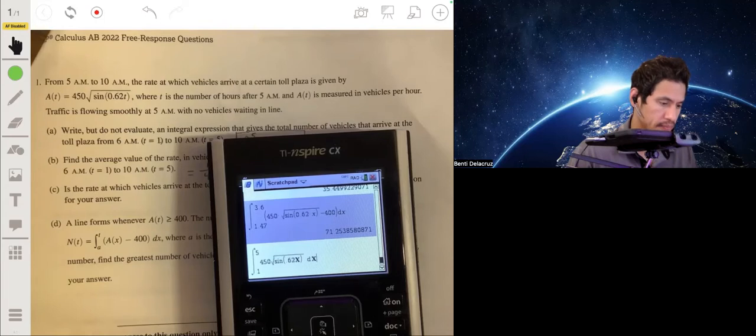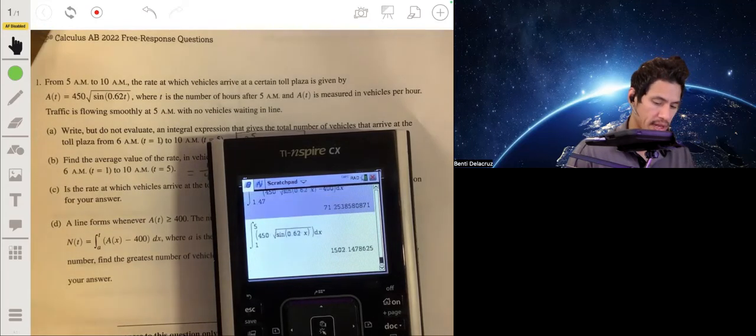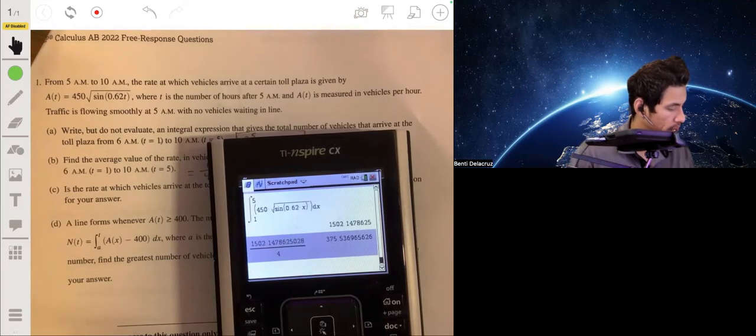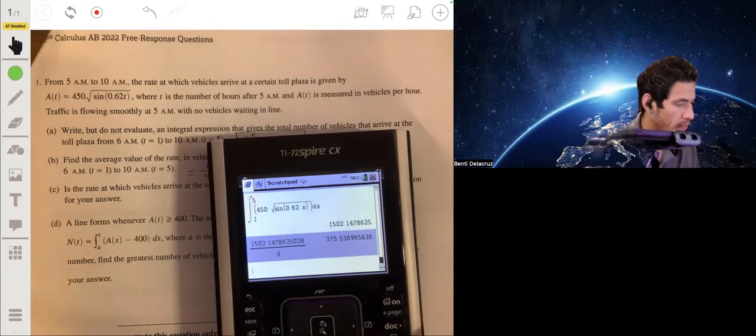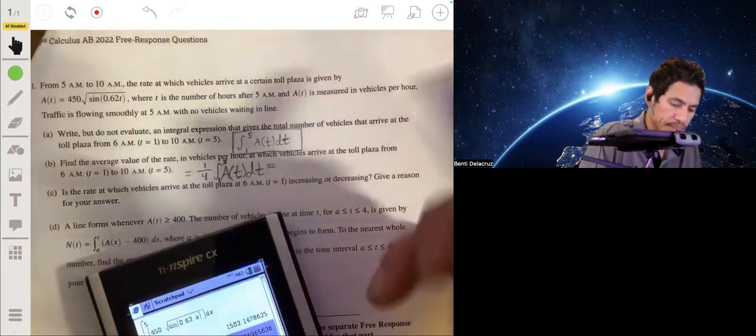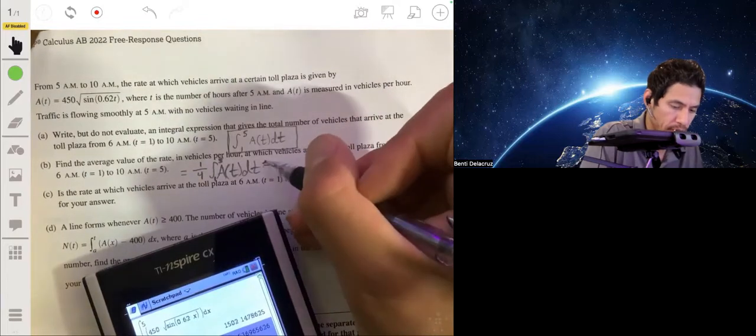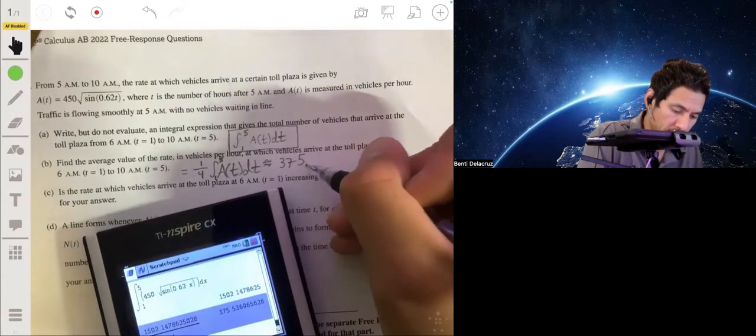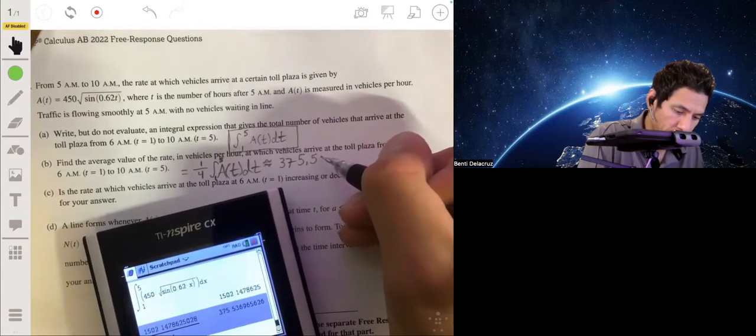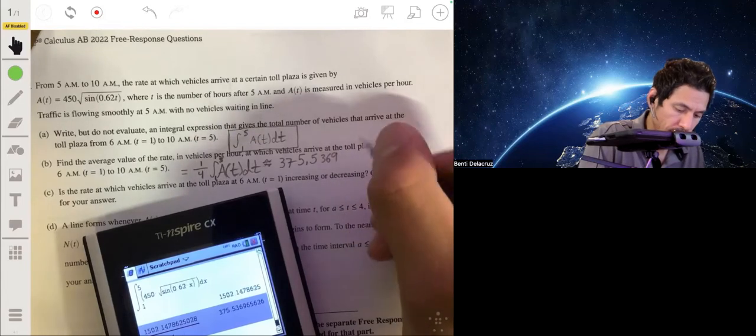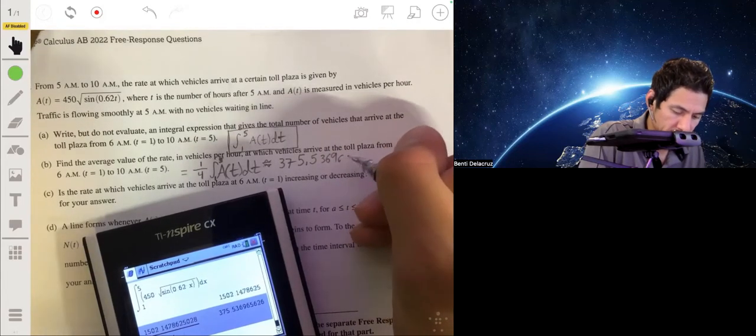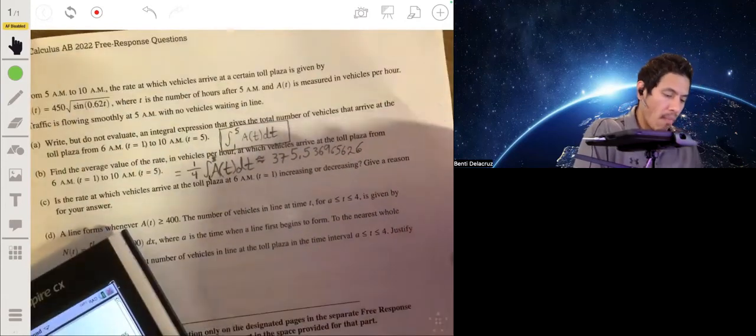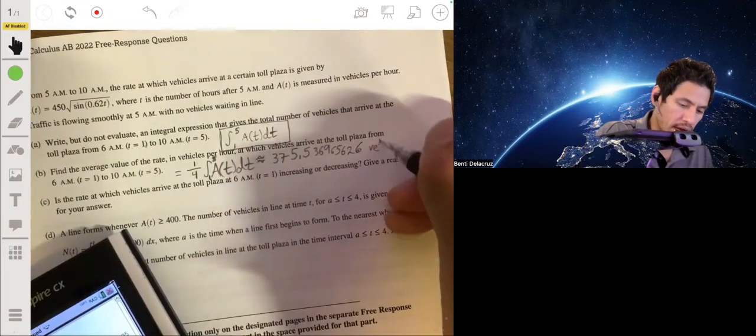1502.16. And then we just divide this by 4. And we'll get about 375, or 375.5. Let's round it to nearest tenth. So about 375.5369. I'll write the whole thing, I guess. 375.54 vehicles per hour.